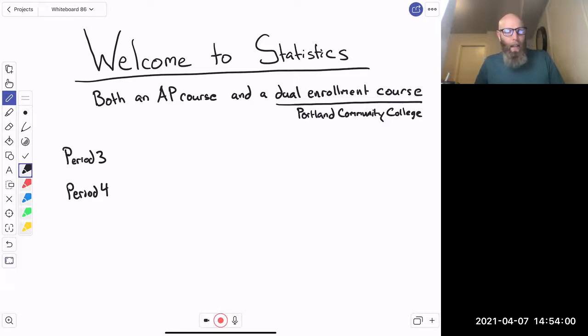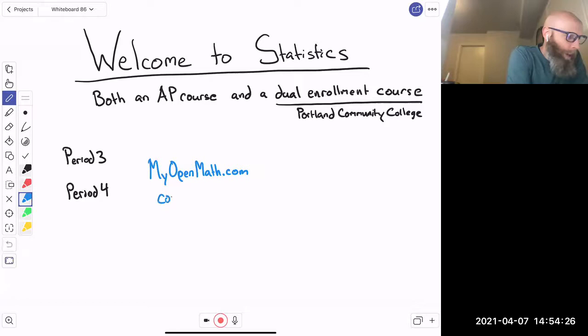It is called MyOpenMath. What you're going to do is go ahead and sign up at MyOpenMath.com, and at some point they're going to ask for a course ID. The course ID that we need to put in is 107640, and that'll get you into a class called Statistics.